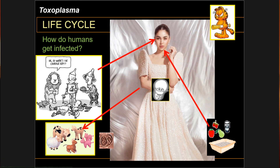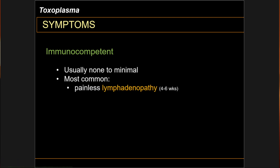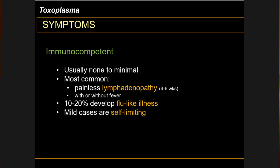Toxoplasma primarily affects the brain, skeletal muscles, the myocardium, and the eyes. Even in immunocompetent individuals, infections can persist for a lifetime. The symptoms of toxoplasmosis really depend on the immune status of the patient. In immunocompetent people, it is primarily self-limiting as long as it doesn't involve the macula. The most common manifestation is painless lymphadenopathy, which usually lasts a few weeks. Some people will manifest with flu-like illness; however, mild cases are primarily self-limiting. Rarely, chorioretinitis due to Toxoplasma can be seen even in immunocompetent people.